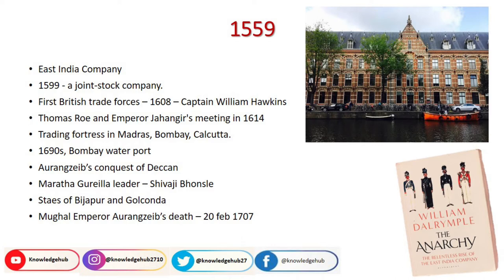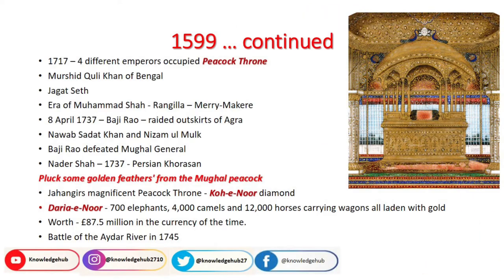In 1707, Mughal Emperor Aurangzeb died. This is one of the very important points in the history of the subcontinent — how the Mughals lost their glory and power. Aurangzeb died without announcing any heir, so there was no one competent to rule after him. In 1717, four different emperors occupied the peacock throne within a single year. The Mughal state was almost in anarchy, and people started losing their trust in the Mughals. As a result, people stopped paying revenues to the Mughals and the empire started to weaken.